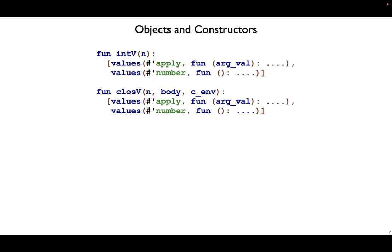When we started adding objects to mo, we wrote functions like these two, intV and closeV. These functions have a lot in common. The result is always a list, and that list represents an object.